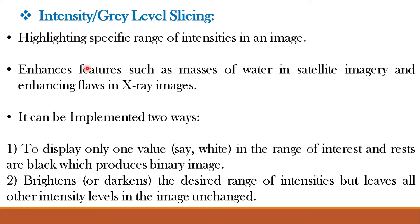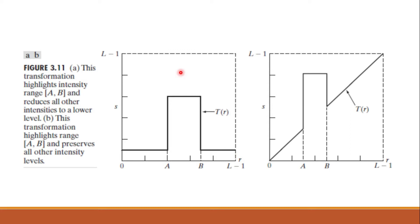Applications include enhancing features such as masses of water in satellite imagery and enhancing flaws in x-ray images. Intensity level slicing can be implemented in two ways. The first approach is to display one value, say white, in the range of interest and keep the rest black, which produces a binary image. The second approach is to brighten or darken the desired range of intensities but leave all other intensity levels unchanged. This figure shows the two different approaches of gray level slicing. For the first one, the transformation highlights the intensity range from a to b and all other values are kept near to 0, that is almost equal to black.